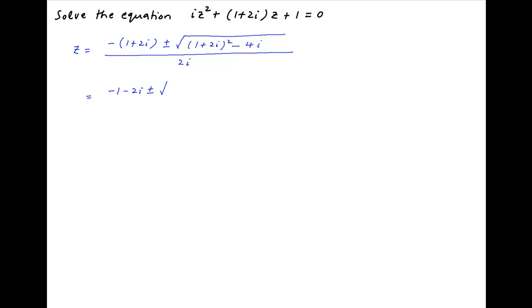This is equal to minus 1 minus 2i plus minus square root of 1 plus 2i square, which is minus 4, plus 4i minus 4i divided by 2i.